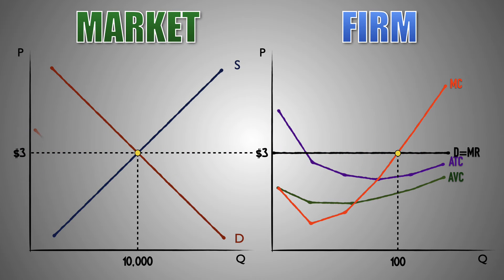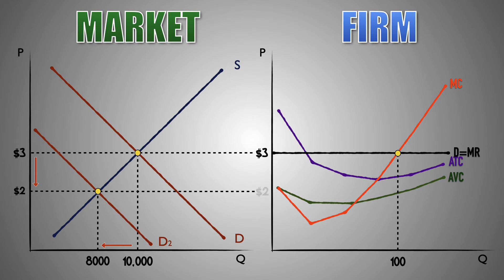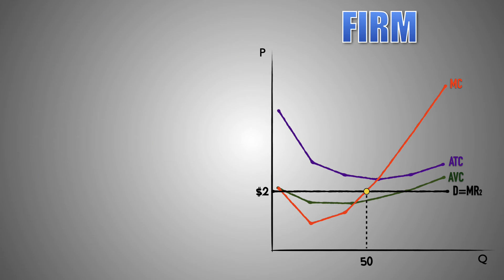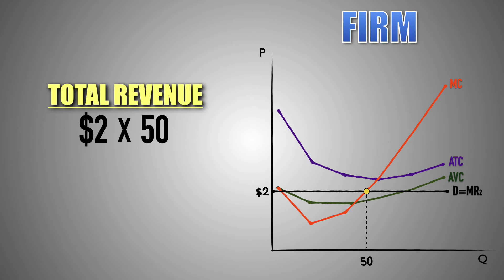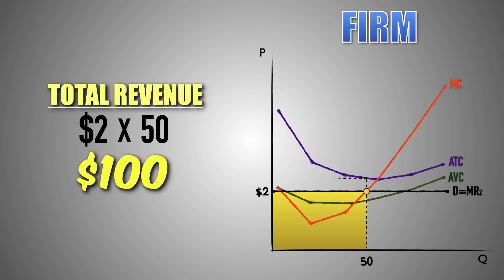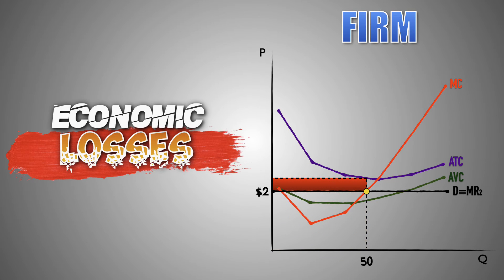Likewise, if demand for Good A decreases, the market price for Good A will decrease to $2. Again, as a price taker, the firm will sell its output at the new market price, which decreases the marginal revenue earned by each additional unit sold to $2. This will be visualized with a downward shift of the demand and marginal revenue curve. With a lesser marginal revenue per unit, the firm will seek a new profit maximization point and decrease the quantity of Good A it produces until marginal revenue equals marginal cost. Now that product price has fallen to $2 and the firm has reduced its output to 50 units, the firm will decrease its total revenue from $300 to $100, leading the firm's economic profits to turn into economic losses.